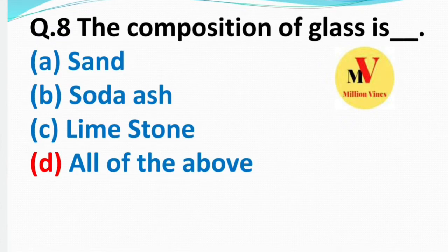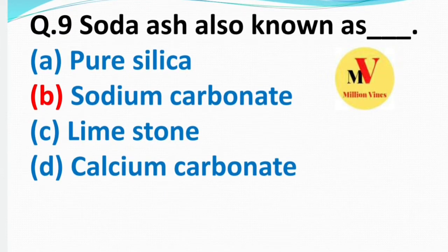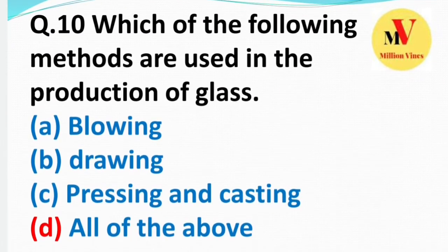Next: The composition of glass — right answer noted. Next: Which of the following methods are used in the production of glass? The right answer is all of the above — blowing, drawing, pressing and casting.